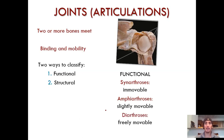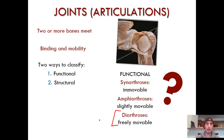And finally, diarthroses — freely movable. A big old fat softball just lobbed at you to smack out of the park: can you name a fully movable joint in your body? Pick one, pick any of them.